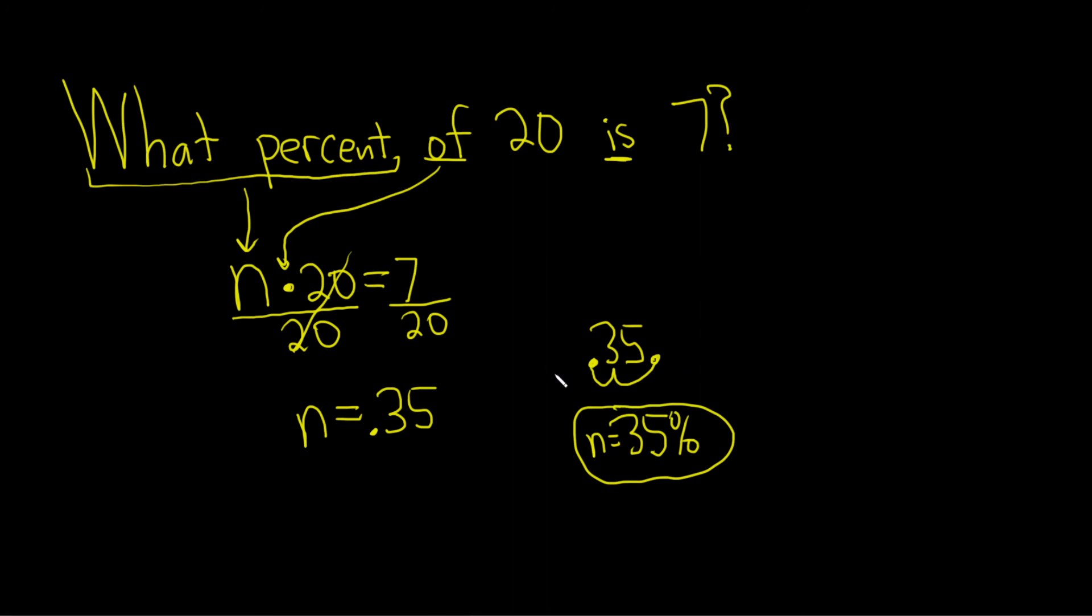Let's go ahead and read through it together. So what percent of 20 is 7? So now that we've solved for this, we can say it using this number. 35% of 20 is 7.